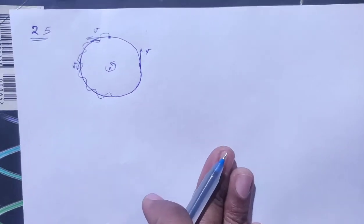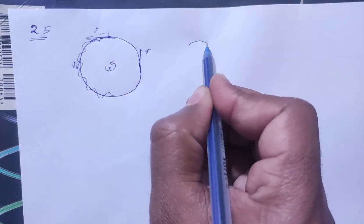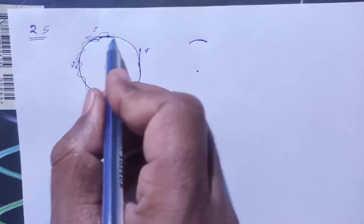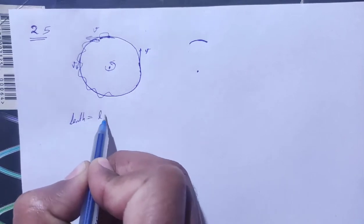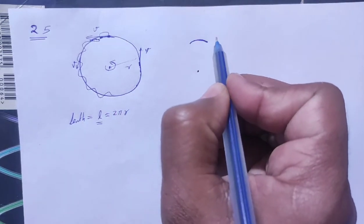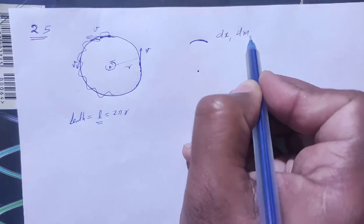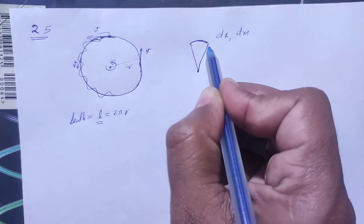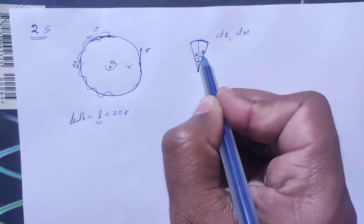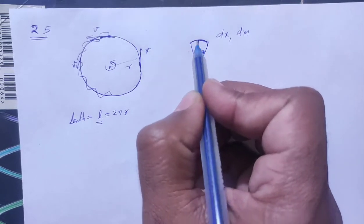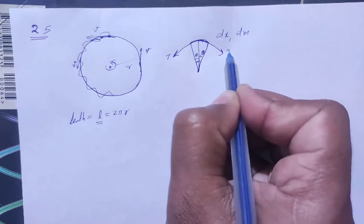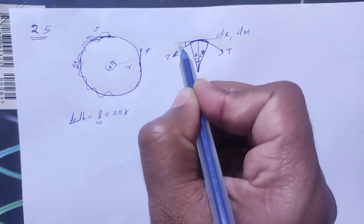If we consider a small portion of the string, we look at a small element. We consider its length and the angle subtended. The angle at the center is 2θ, so we have 1θ on each side. The string element has tension acting on both sides.